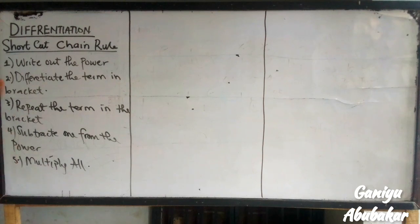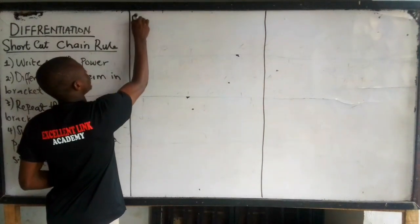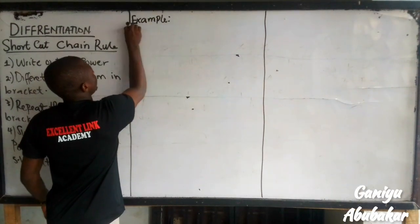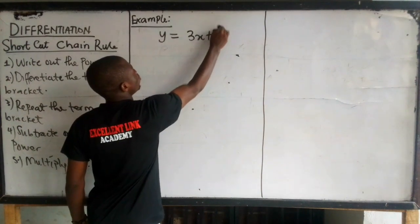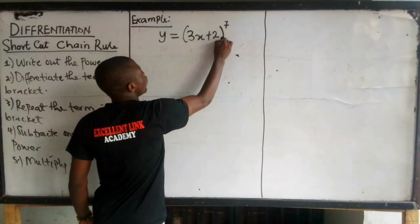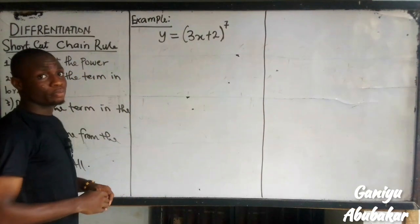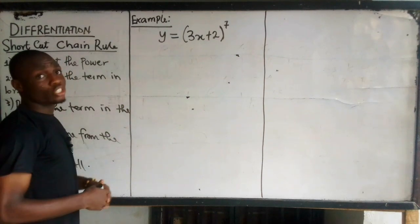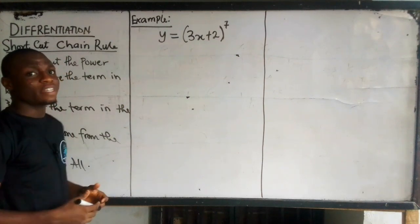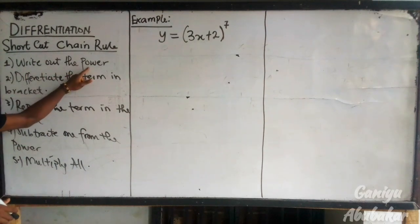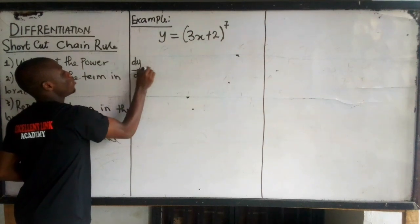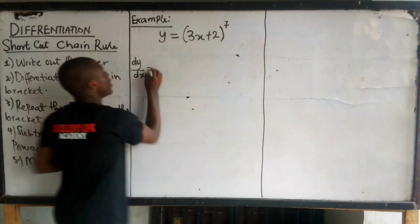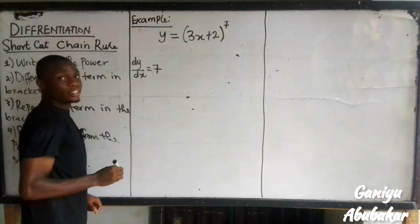Let's take an example to see how we can use this to solve problems on chain rule via shortcut. Example: if I have y equal to (3x + 2) to the power 7, this is a general question. How do you solve this using the shortcut? Step one: write out the power. My power here is 7, so my dy/dx will be equal to 7.